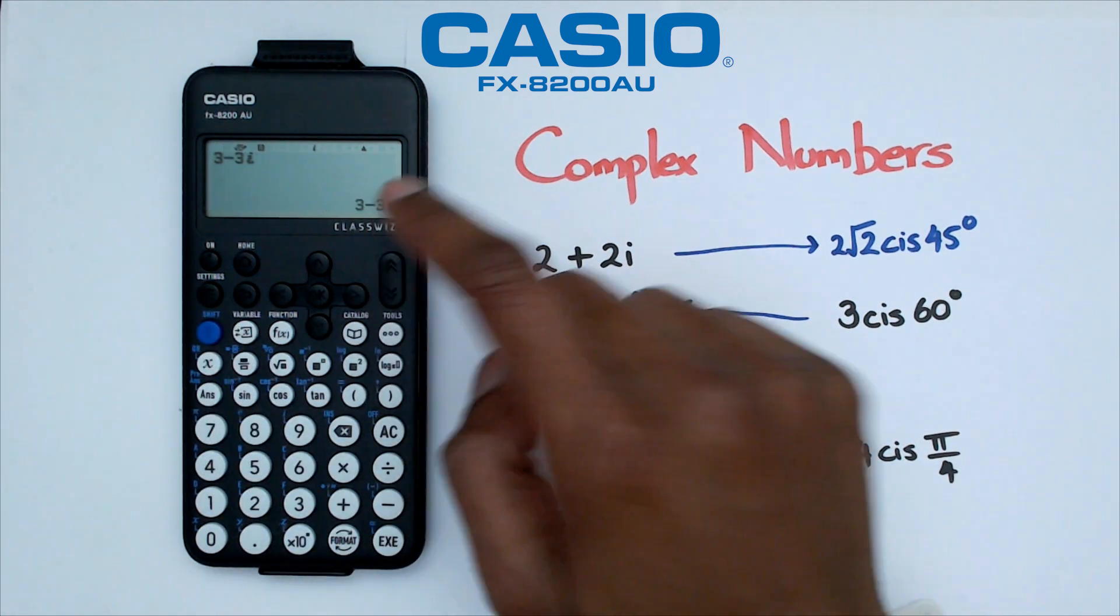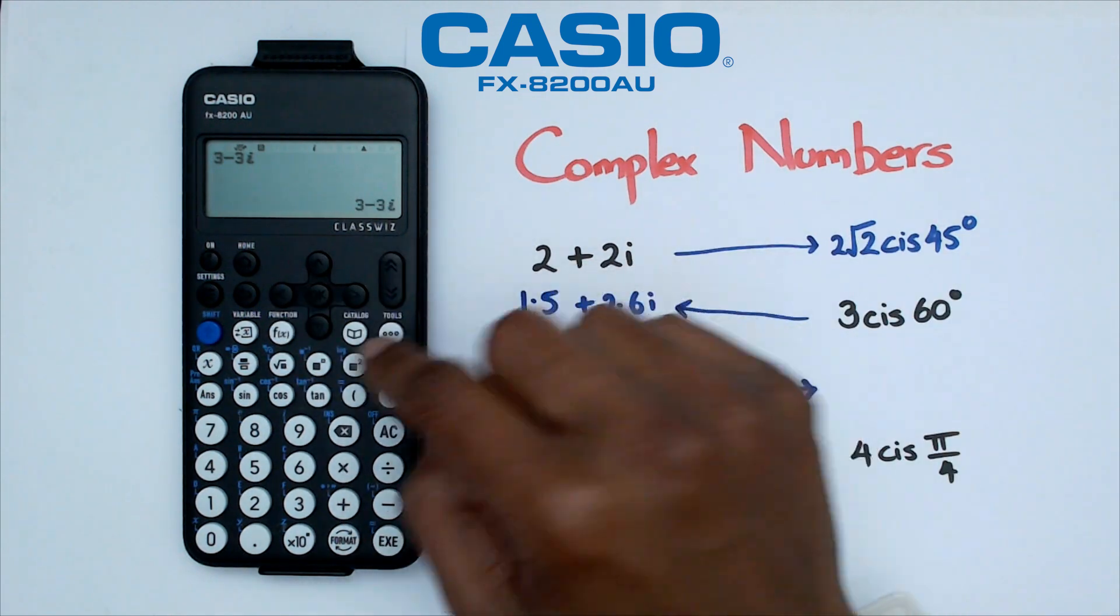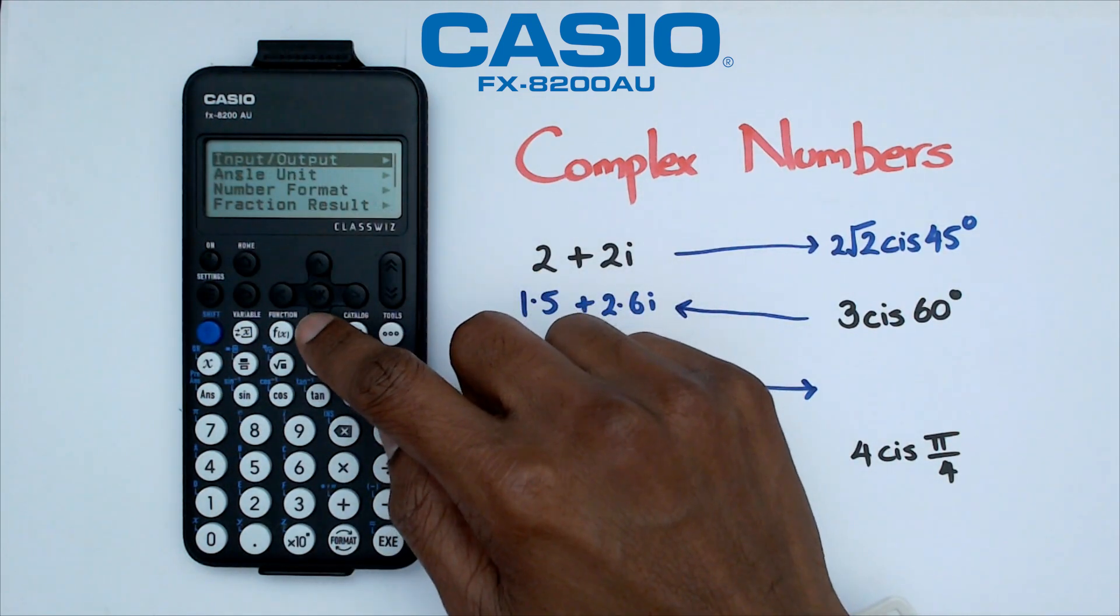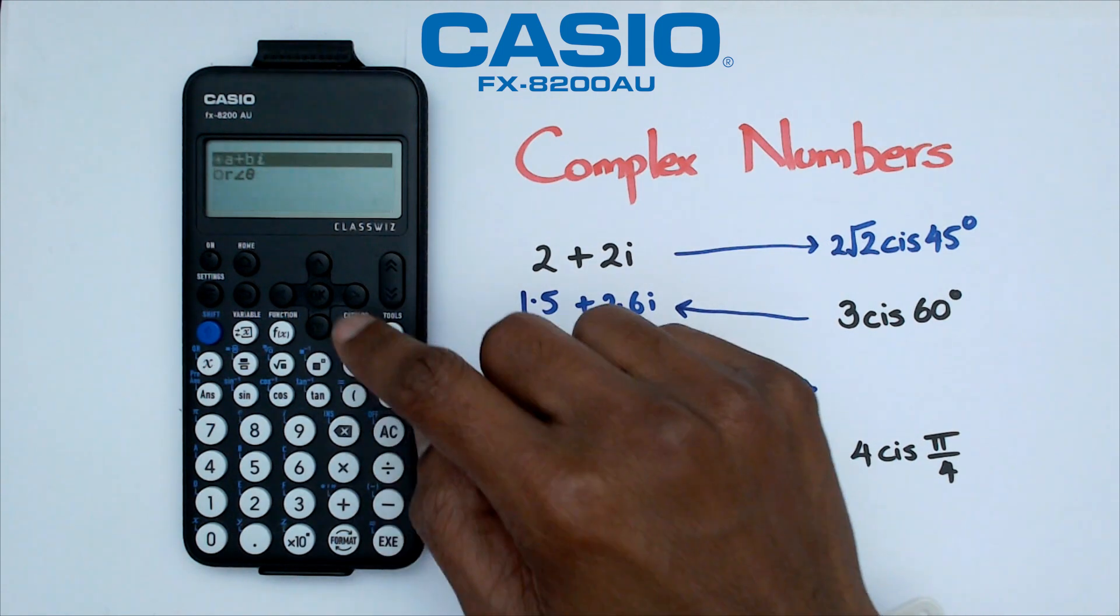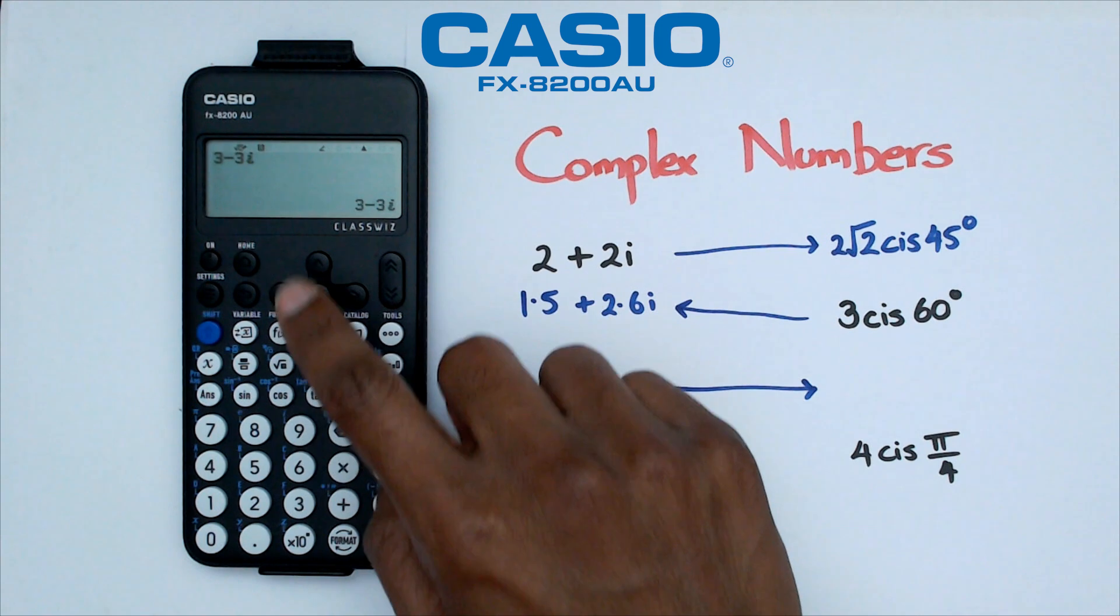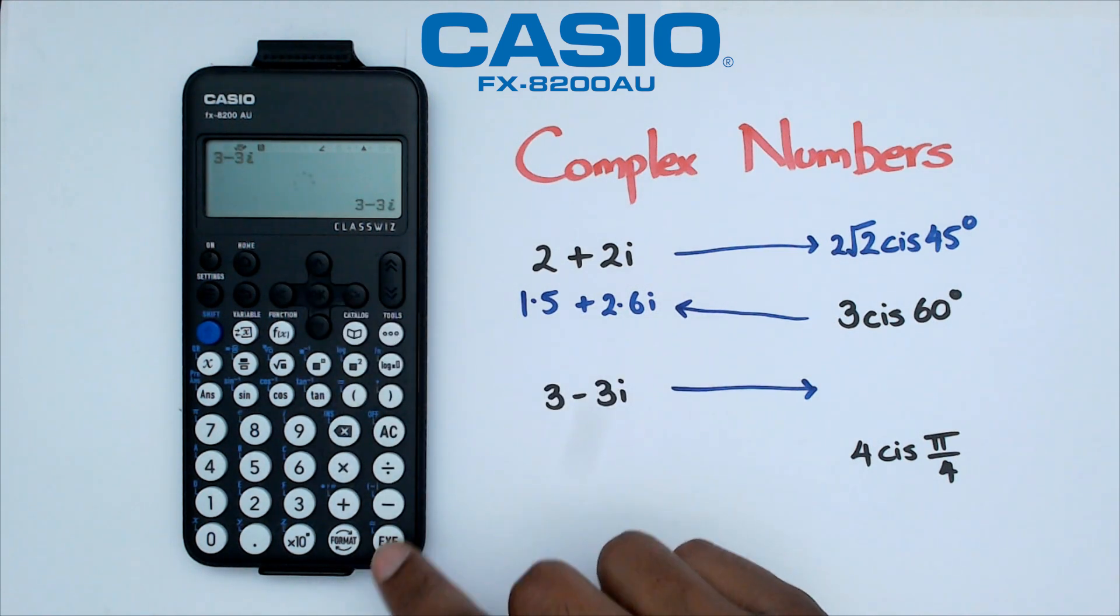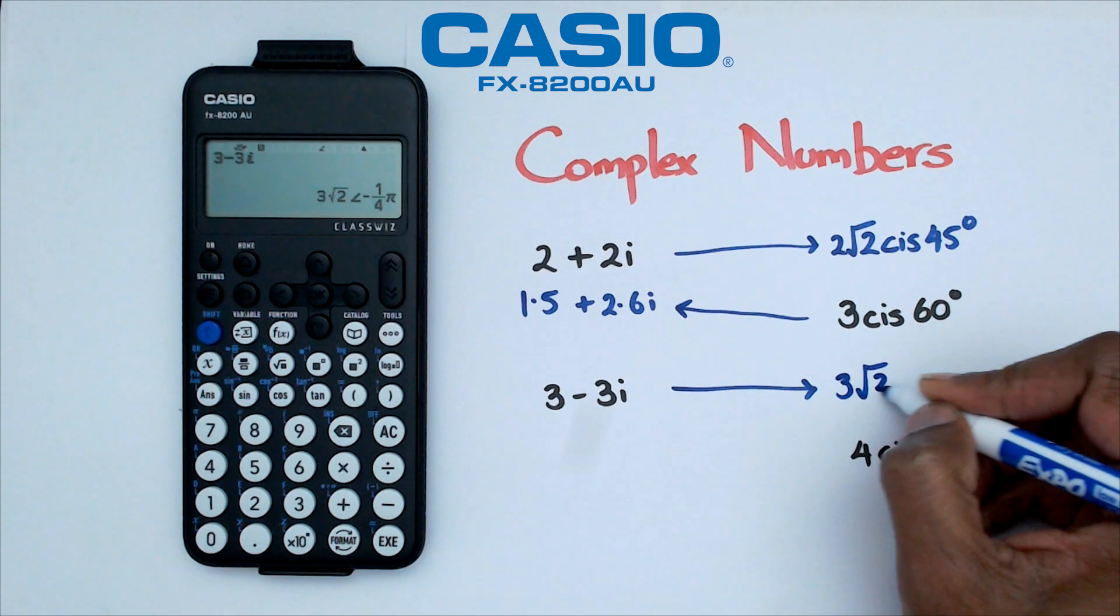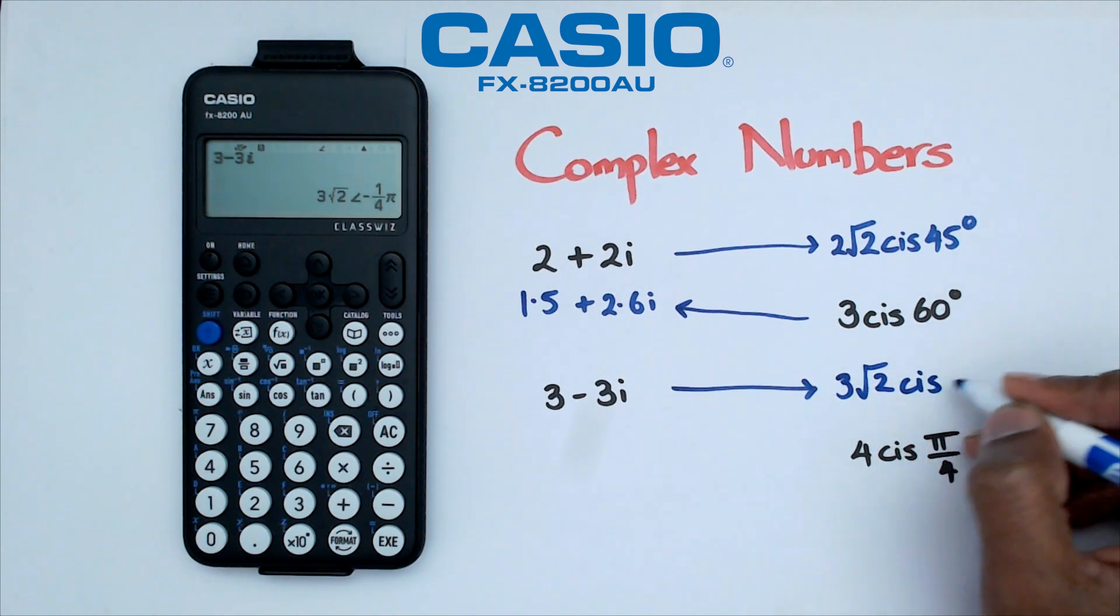And of course, I forgot to put this in polar form. So I am going to go to settings, calc settings, and I want to change this complex number to r cis theta, which is the polar form. And I'm going to go back and do 3 minus 3i. And here, I've got 3 root 2 cis negative pi over 4.